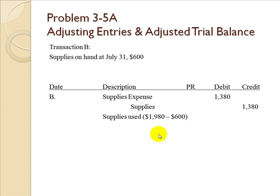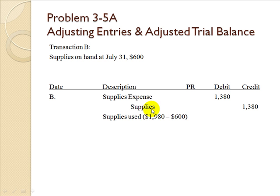Transaction B states supplies on hand at July 31st is $600. Looking at the unadjusted trial balance on page 141, supplies has a debit balance of $1,980. We deduct the $600 supplies on hand from $1,980 and determine that supplies used for the period was $1,380. We debit supplies expense $1,380 and credit supplies $1,380. After posting, the supplies account will have a balance of $600.